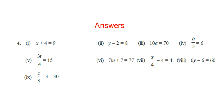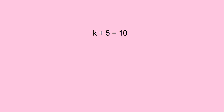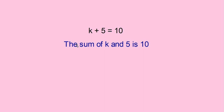Check your answers yourself. Here you have an equation: K plus 5 is equal to 10. How will you change it into a sentence? Plus means it is a sum, so you can write it as: the sum of K and 5 is 10.